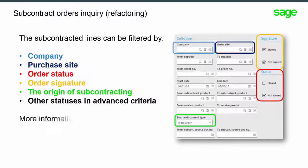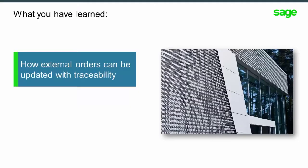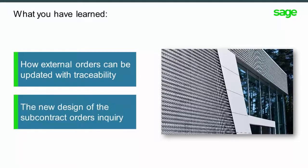Finally, more information can be set up in the grid, similar to the order's lines inquiry. So, what we've learned is how an external order can be updated with traceability and the new design of the subcontract order's inquiry.